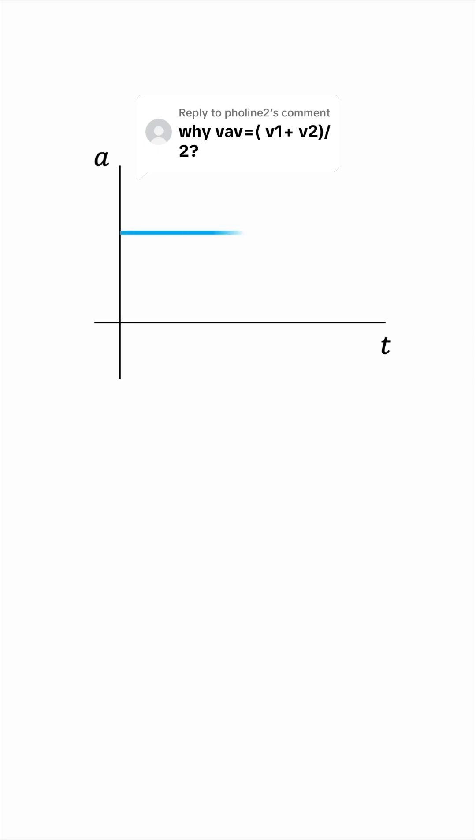Well, when acceleration is constant, the velocity will be a straight line graph. Say we want to find the average velocity between two points, at A and B, for example.